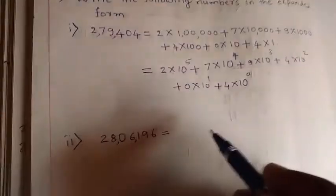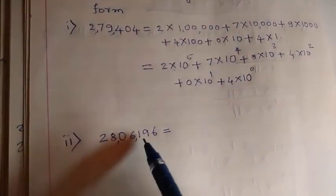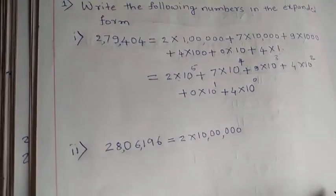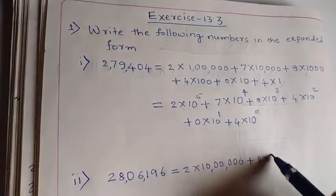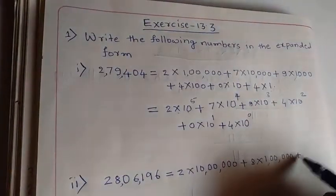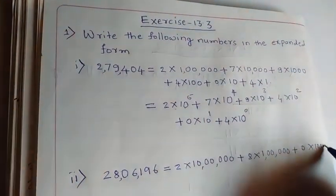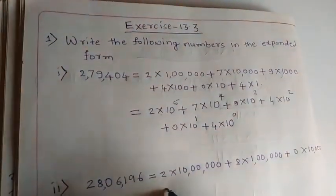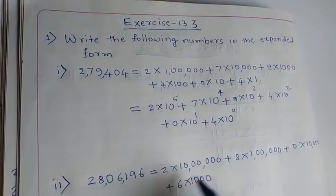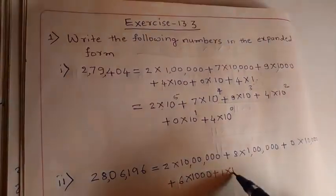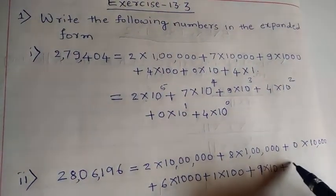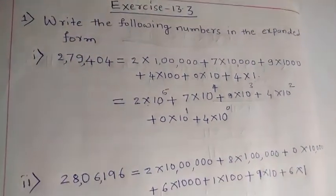Let's see another example: twenty-eight lakh six thousand one hundred and ninety-six. Two into ten lakh, next eight into one lakh, plus zero into ten thousand, plus six into thousand, and one comes in the hundreds place. Plus nine into ten, plus six into one.